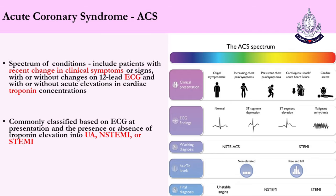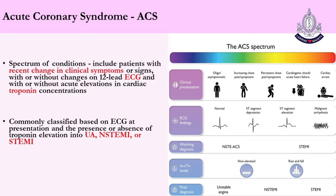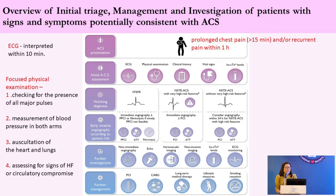This is the management of acute coronary syndrome. The patient can present with recent changes in clinical symptoms or signs, like increasing or persistent chest pain. Sometimes the patient can present with cardiogenic shock, acute heart failure, or cardiac arrest. At that time, we have to evaluate the ECG. If there is ST elevation, it is STEMI. If there is ST depression, we check cardiac troponin concentrations: if elevated, it is NSTEMI. In cardiac arrest, the patient can present with malignant arrhythmias on ECG. This is the overview of initial trial management and investigation of patients with signs and symptoms potentially consistent with ACS.